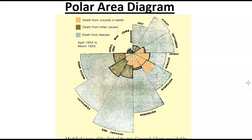So if you look at it, she broke the months from April 1854 to March 1855 into these 12 segments. And she color-coded them, so that way you could see that the orange area was death from wounds in battle, the green area is death from other causes, and the gray area is death from diseases.